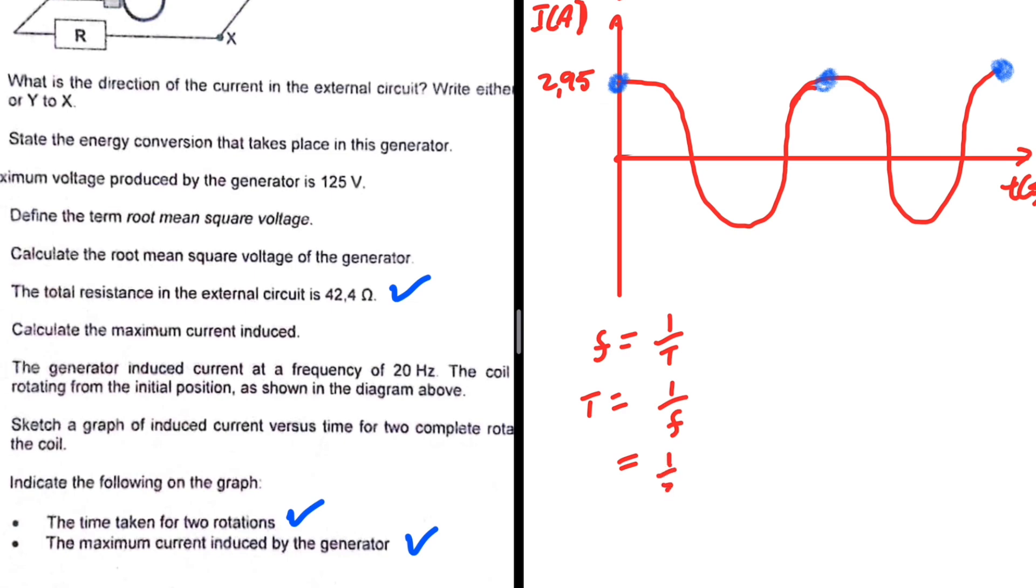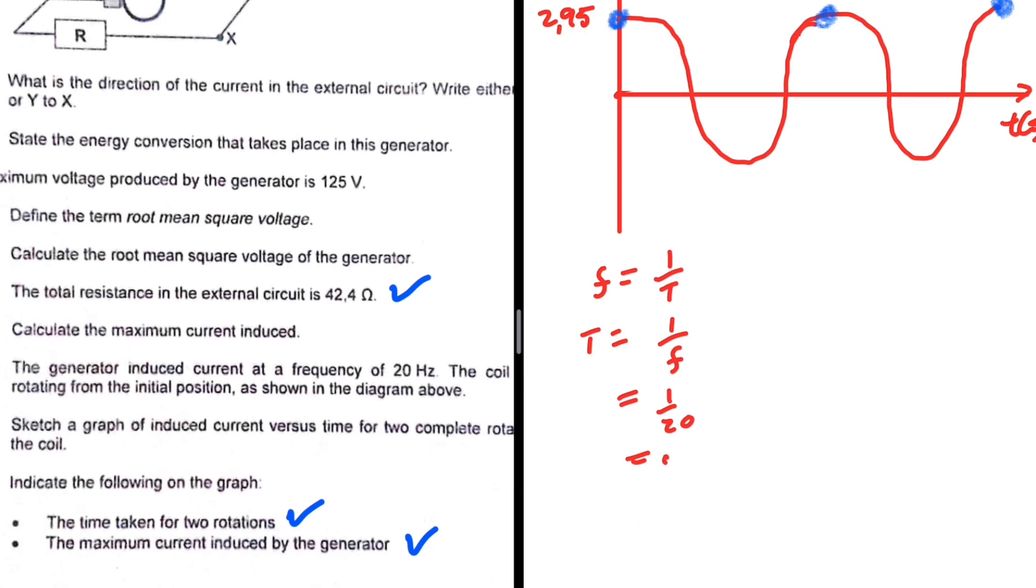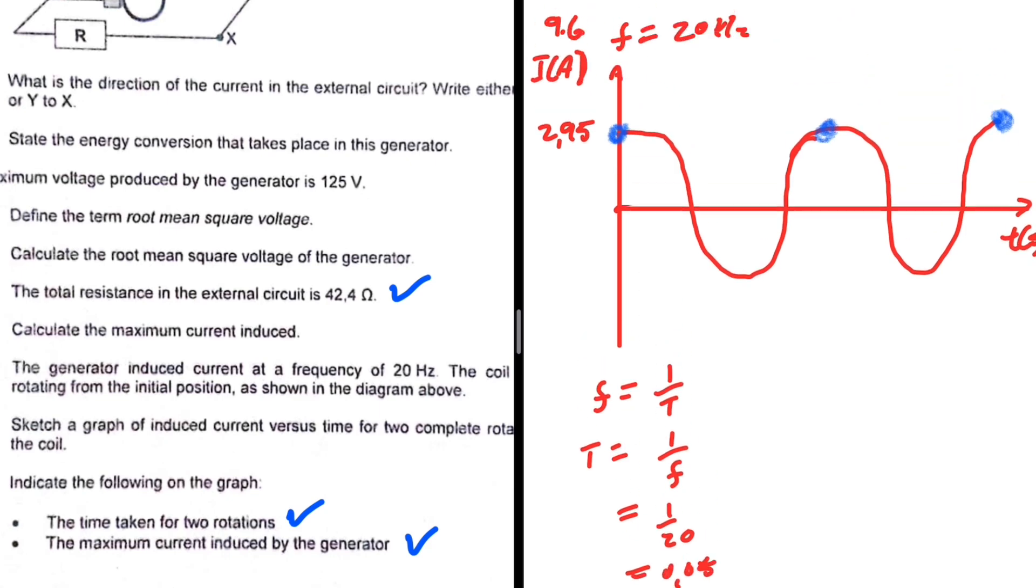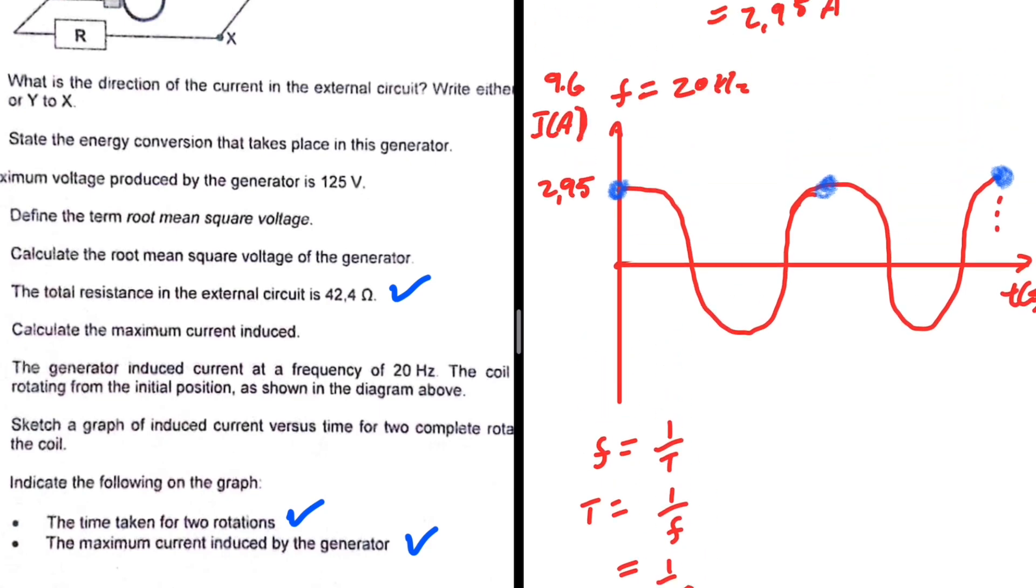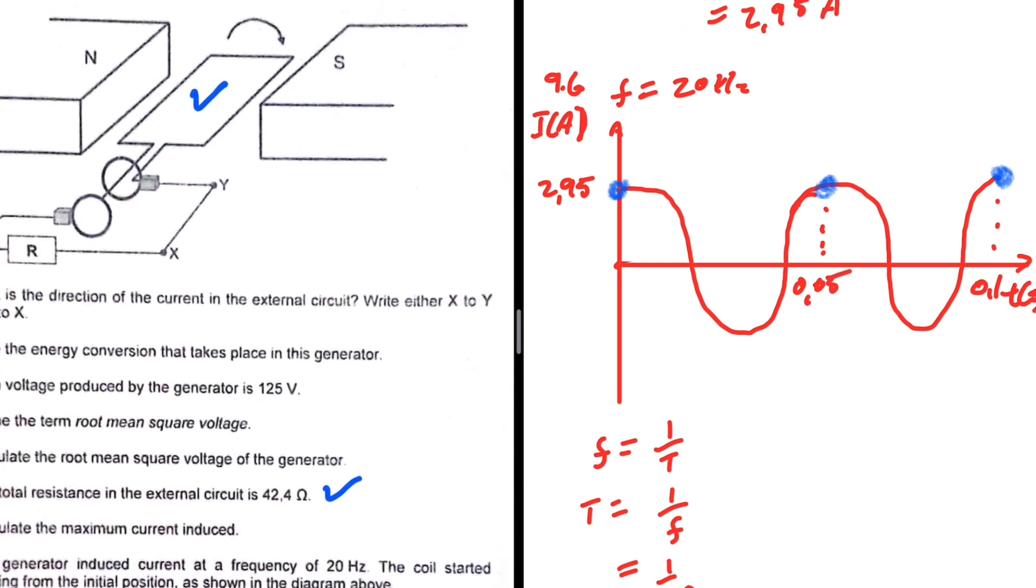1 over 20 equals 0.05. So the time taken to complete the two rotations will be 0.05 multiplied by 2, because the period is for one complete cycle. So if you multiply by 2, we get 0.1. So here we have 0.05, and there we have 0.1. There we go, that is question 9, electrodynamics.